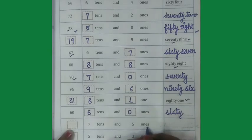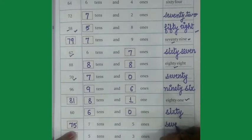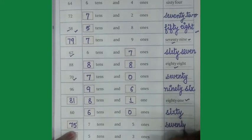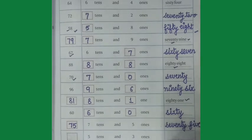Come on next one, 7 tens and 5 ones, how we can write it, we can write it 75. Along with we will write the number name also, 70, 5, S-E-V-E-N-T-Y-70-F-I-V-E-5.